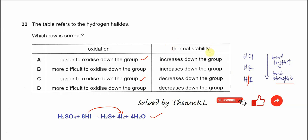Again, thermal stability is how stable is the compound when we heat it. So the hydrogen iodide has the lowest thermal stability, means it's easier to break and decompose. Thermal stability decreases down the group.